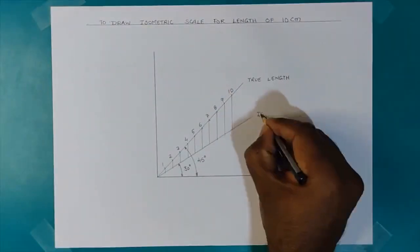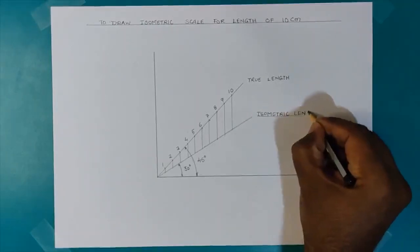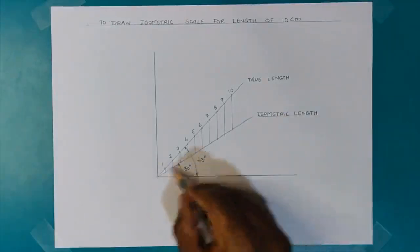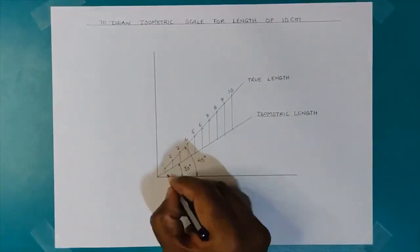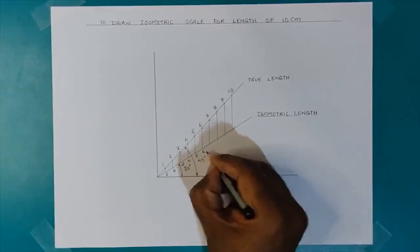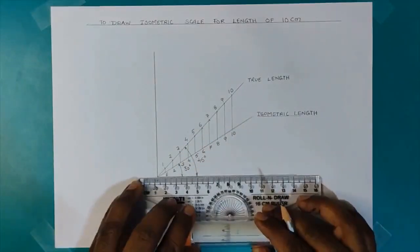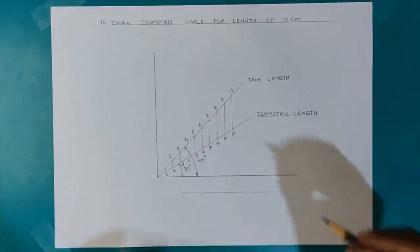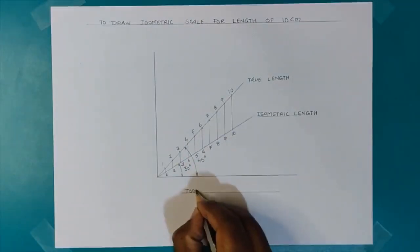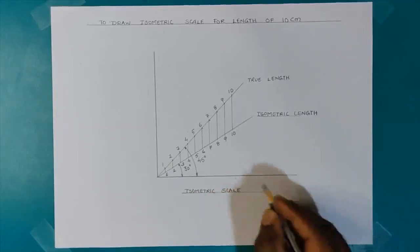So the newly found intersections represent the isometric lengths. So I name the divisions on the inclined line at 30 degrees. So this is the isometric length, which is 9 by 11 times the true length. And this is the isometric scale.